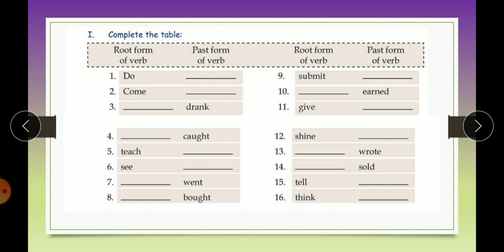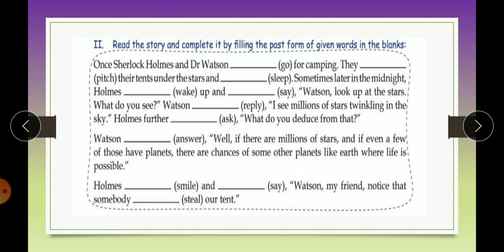Now let's move on to exercise 2. Read the story and complete it by filling the past form of the given words in the blanks. So in the bracket you can see the verbs are already written like go, sleep, wake, say, pitch, answer, steal. So what are you supposed to do? Keep on reading the story and put the past form of these verbs that are given in the bracket.